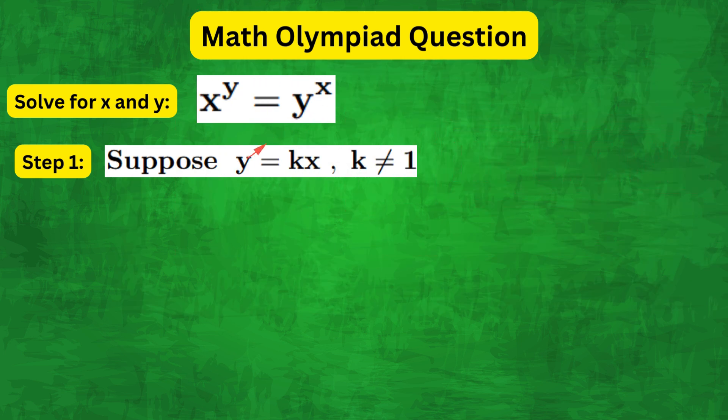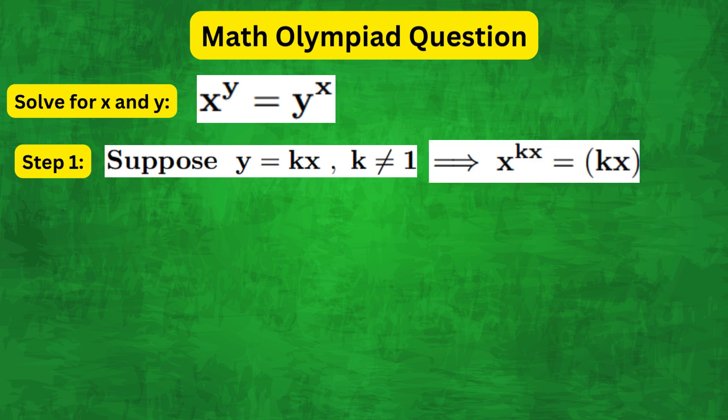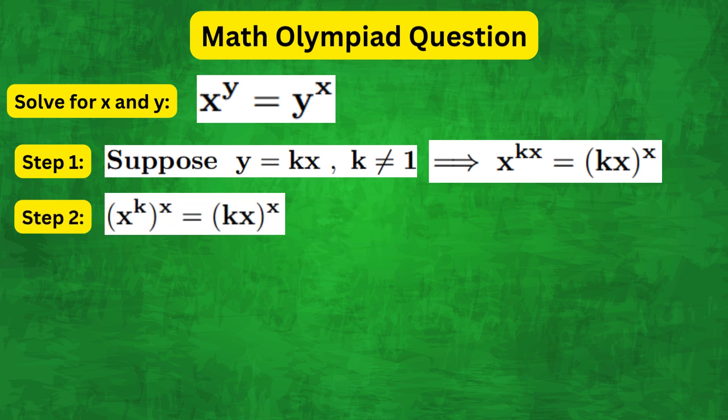Now plugging this form of y into the equation, we get x to the kx equals kx whole to the power of x. And what we want to do here is to rewrite x only in terms of k. So we can write this equation as x to the k whole to the power of x, which is equal to kx whole to the power of x.